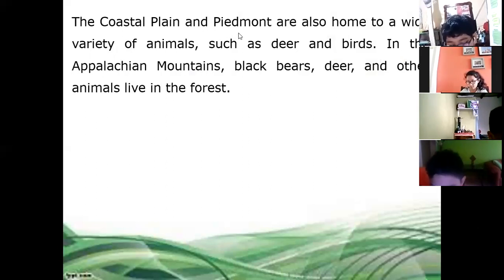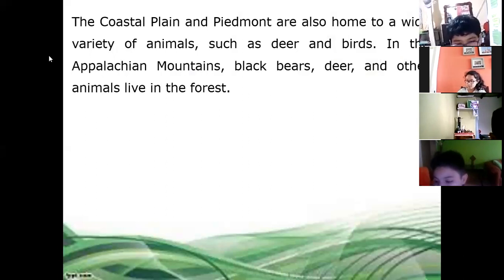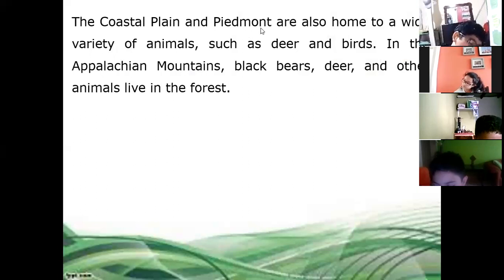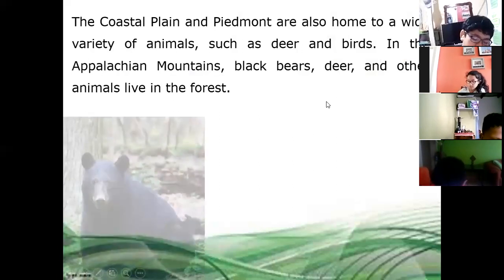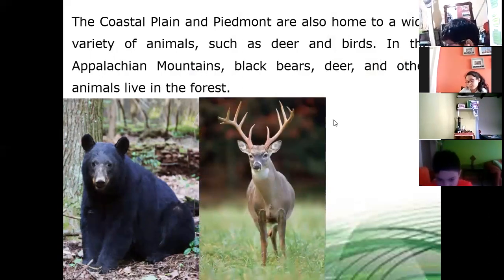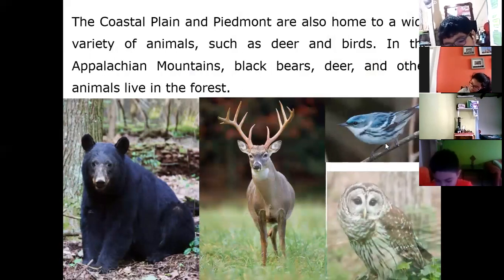The coastal plains and piedmont are also home to a wide variety of animals, such as deer and birds. You know, a crocodile once went onto a golf course — because in golf fields there are little ponds of water, and sometimes alligators are inside. The coastal plain and piedmont are home to a wide variety of animals such as deer and birds. In the Appalachian Mountains, black bears, deer, and other animals live in the forest. Look at this beautiful bird — it's an owl.